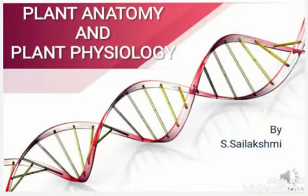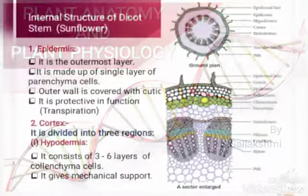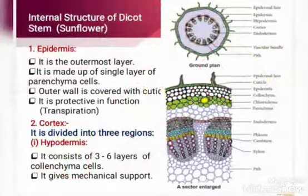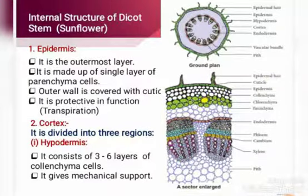Hello students. Now we are going to learn about the internal structure of dicot stem. The outermost region of dicot stem is epidermis. It is a single layer of parenchyma cells. Main function is protection.